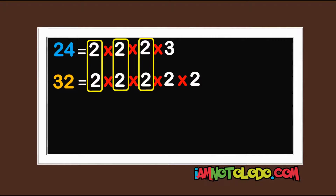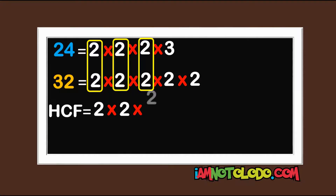We can circle this one — they are not the same, so what do we do? Let's pick each number: 2 times 2 times 2 times 2. So when you multiply these we have 8. Wait — 2 times 2 times 2 is 8. So 8 is the highest common factor of 24 and 32.